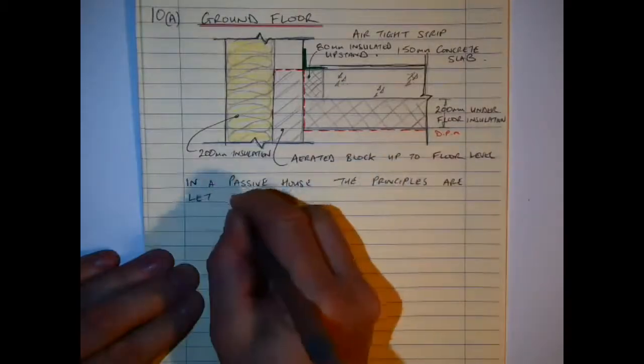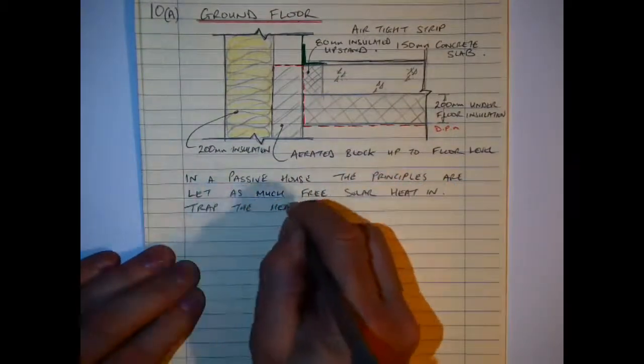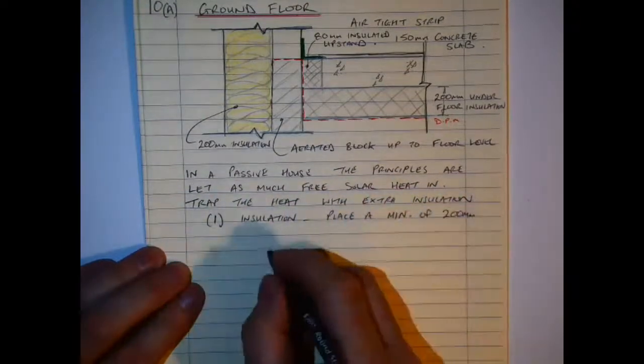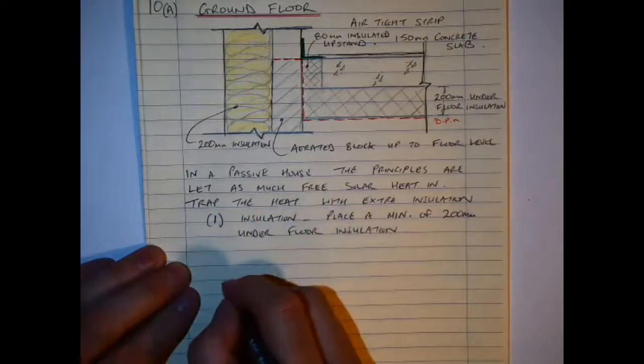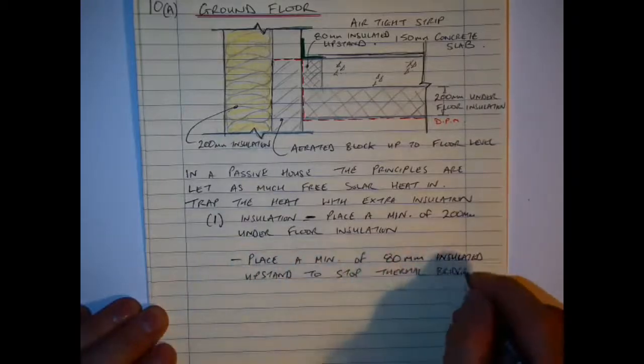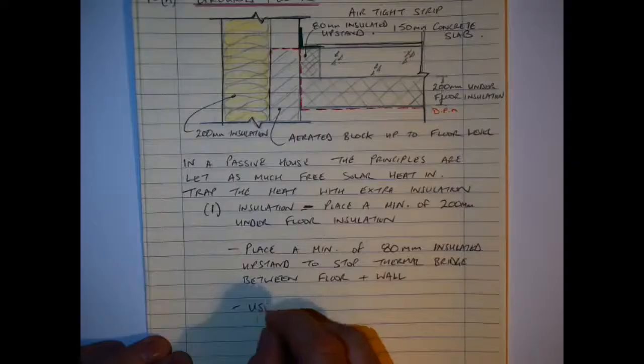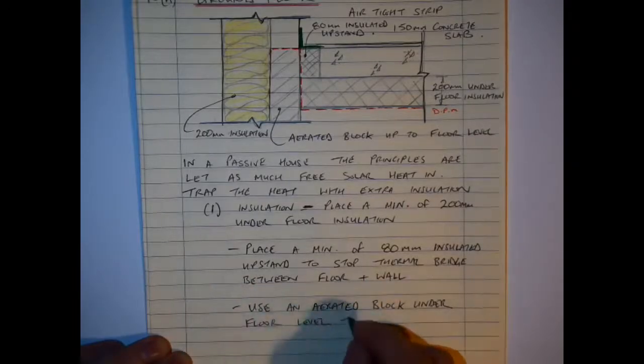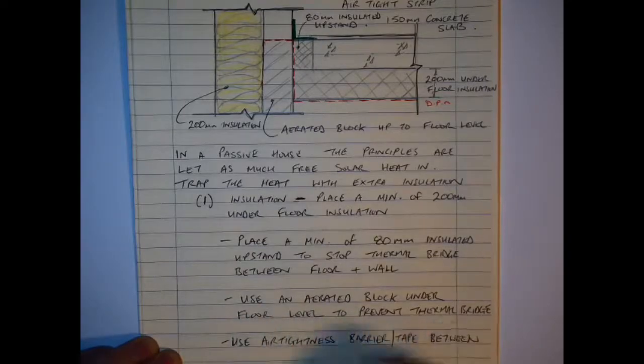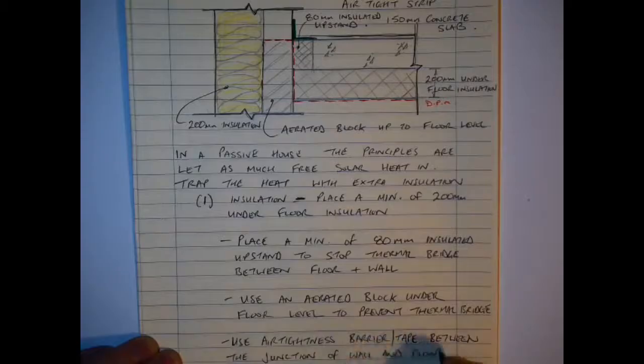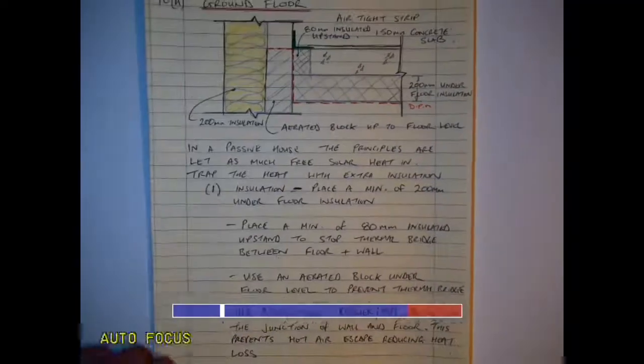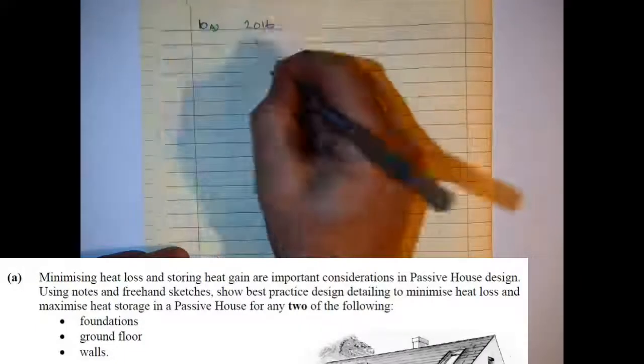So for each of these you are looking roughly half marks for the sketch and half for your note. So in a passive house the principles are to let as much solar heat in, trap the heat with the extra insulation. The insulation as I have indicated in the drawing here is a minimum of 200mm. I have the upstand which again I am just indicating here with a note as 80mm to prevent the thermal bridge between the floor and the wall. Use the aerated block under the floor level to prevent thermal bridge as well. And use air tightness barrier between the junction of the wall and the floor. This will prevent any hot air escaping and reduces the heat loss.